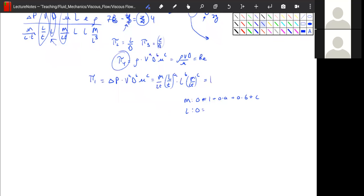Length, we have zero is equal to negative one. Did I write that down wrong? No, I didn't. Negative one plus one times A plus one times B plus negative C.